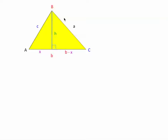We end up with two right angle triangles. I'm going to write down my Pythagorean theorem for each one. So we have C squared — that's the hypotenuse — is equal to X squared plus H squared, the sum of the squares of the other two legs. And over here, A squared is equal to H squared plus (B minus X) all squared.